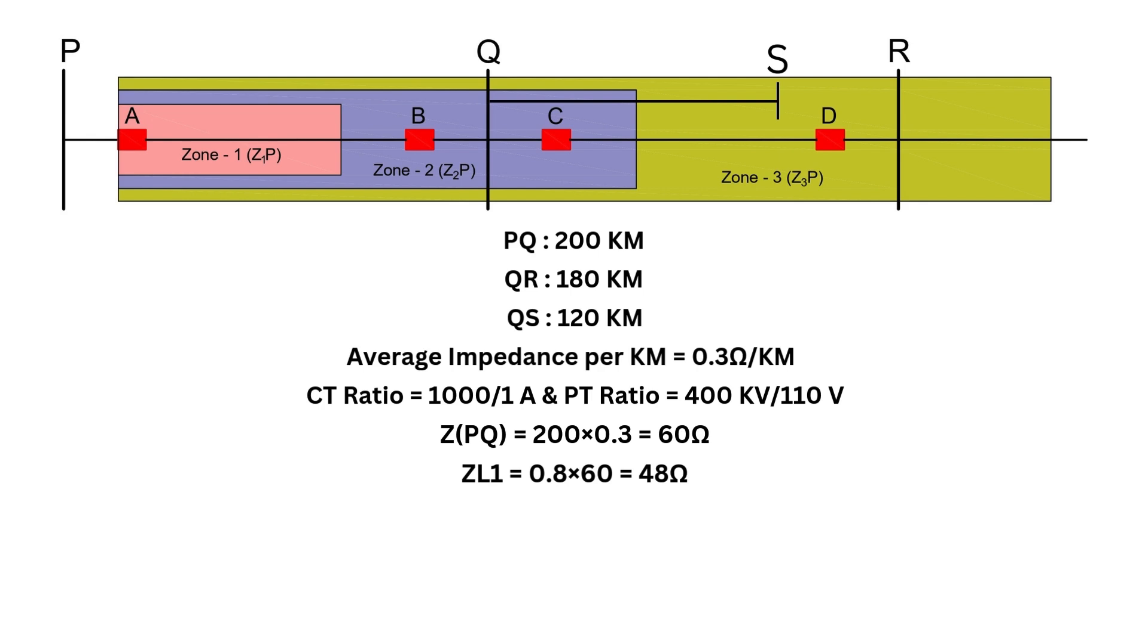But wait, we need to consider the CT and PT ratios because the relay measures voltage and current through them. Let's find the combined CT-PT ratio, which is 0.28. Now we apply this ratio to the impedance. 48 × 0.28, which equals 13.44 ohms.